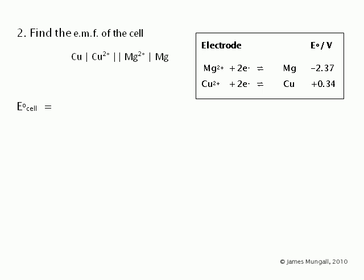Let's get straight onto this similar example to show you how straightforward a question like this is. Here we have a copper electrode half cell and a magnesium half cell. I'm just going to label these the left hand side and the right hand side.